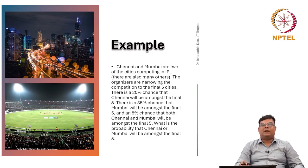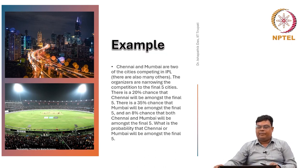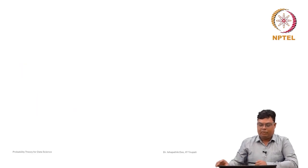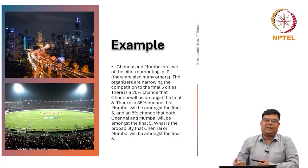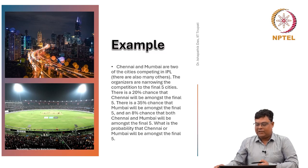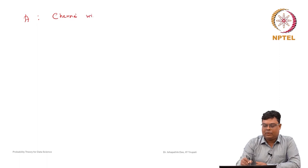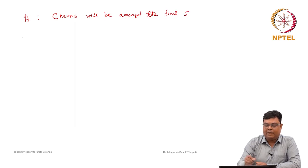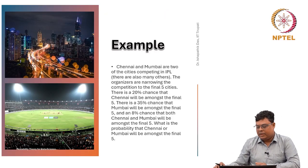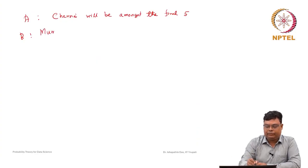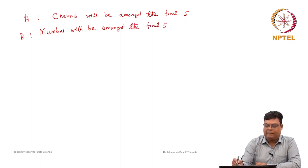Whenever we see 'or', that is nothing but union. If we say 'and', then this is intersection. So how can we solve this problem? We will represent this problem by the events A and B. A is the event that Chennai will be amongst the final five. B is the event that Mumbai will be amongst the final five.